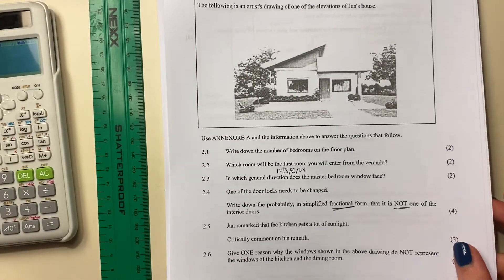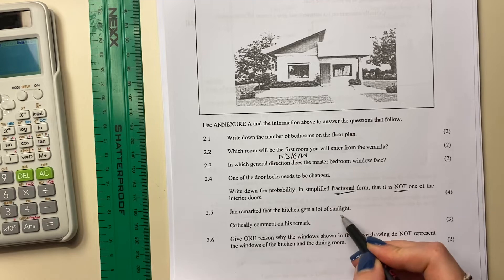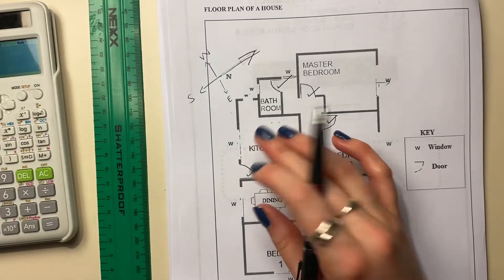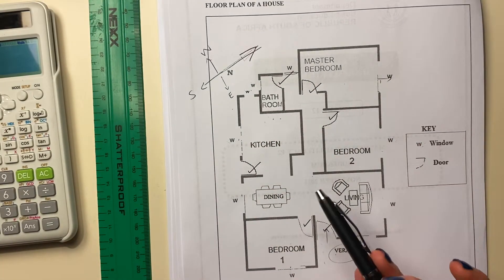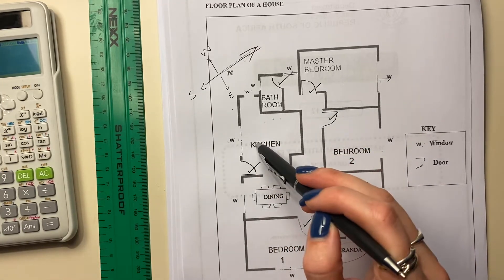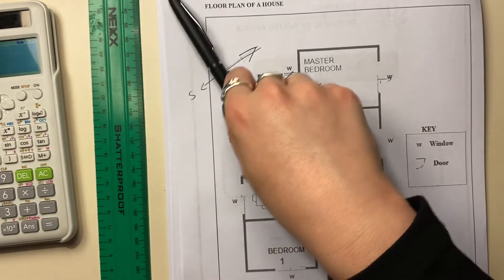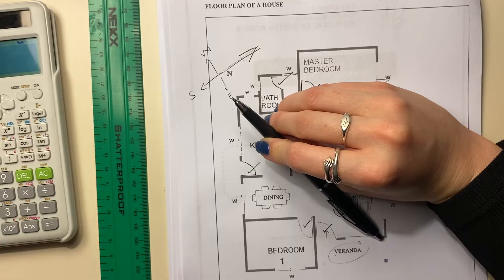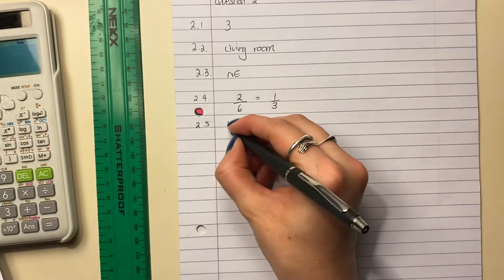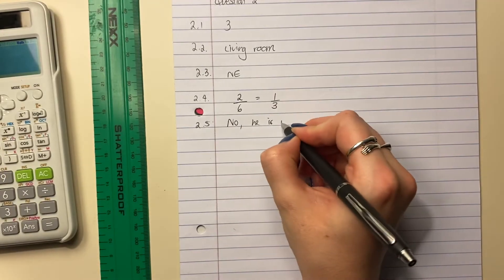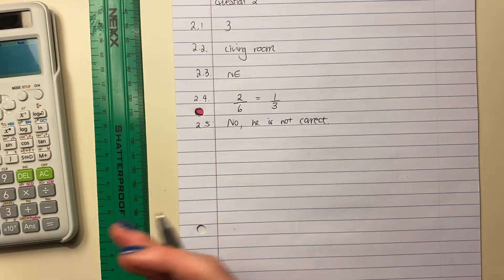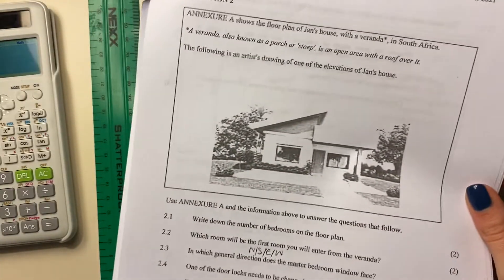So 2.5 says, Jan remarked that the kitchen gets a lot of sunlight. Critically comment on his remark. So here's the kitchen. Now we know that the sun rises in the east and it sets in the west. So actually that doesn't make sense because he's not going to get a lot of sun over there. If it sort of rose in the west and then sort of set in the east, then it would. But in this case, no. So we say, Jan, sorry, you're not right. So we say, no. He is not correct. So always when, with these questions actually state whether the statement is valid or correct. There's like a mark allocated to that. But then it says critically comment. So we need to comment on this.